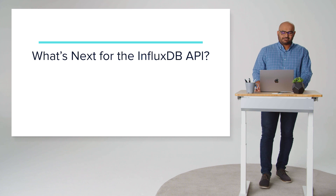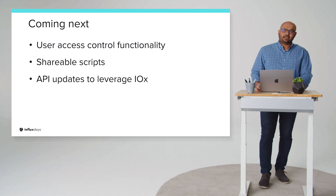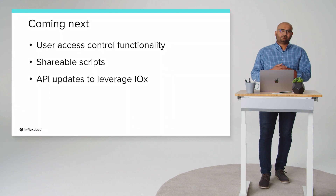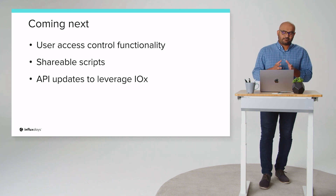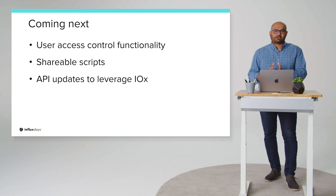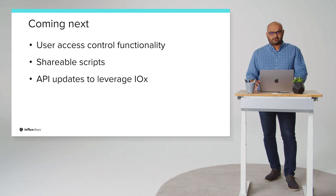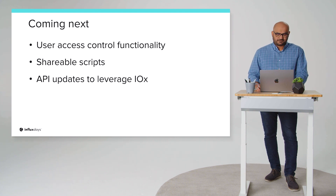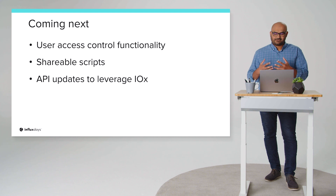So what's next for the InfluxDB API? We have a few exciting things coming down the pipeline. In the next few quarters, we're going to add more user access control functionality — including a read-only user and possibly a super admin user — to help you better manage access to data on the platform. We're also making our scripts shareable, scoped to an individual or to the org, which will really help with the knowledge sharing use cases we discussed. Finally, we're putting a lot of thought into the evolution of our API with the introduction of IOX as our time series engine, and we're excited about where that takes the API.